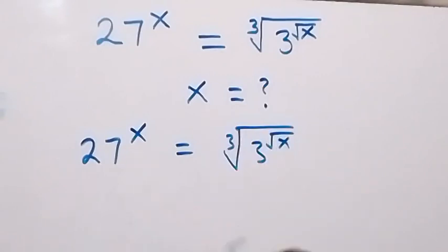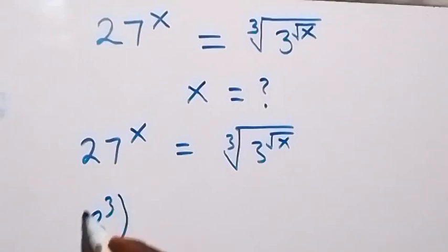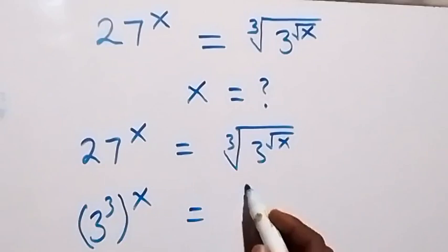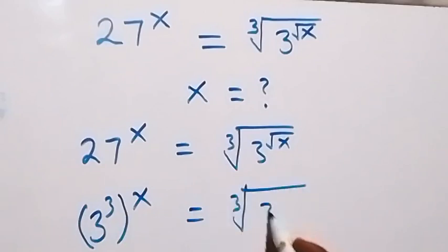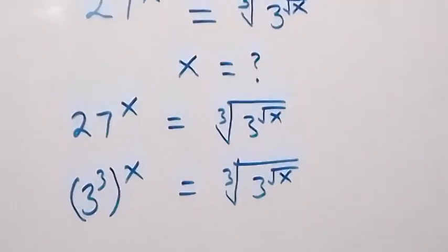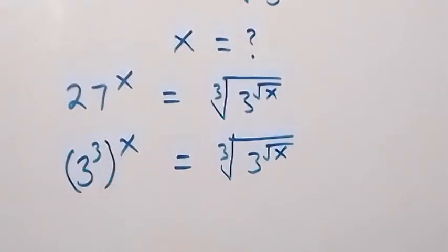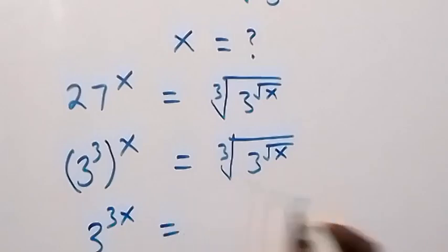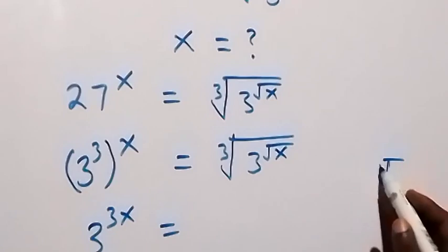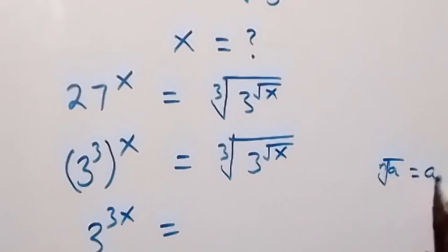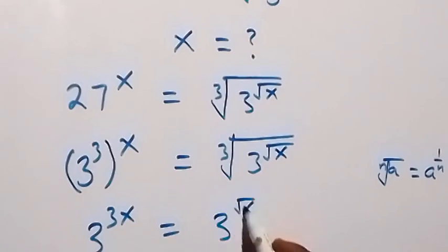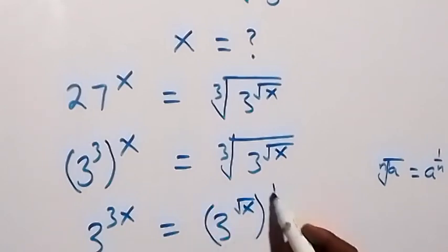We can write 27 as 3 raised to power 3, so here it becomes 3 raised to power 3, then raised to power x, equals k root of 3 raised to power root x. Applying the law of indices, this power opens to give 3 raised to power 3x. Now, recalling that n root of a equals a raised to power 1 over n, we apply this here, and this becomes 3 raised to power root x, then raised to power 1 over 3.